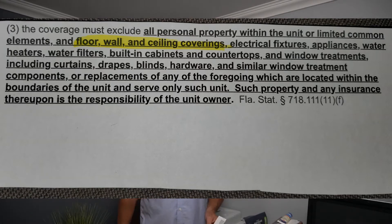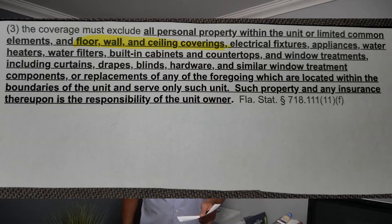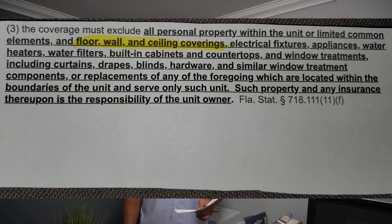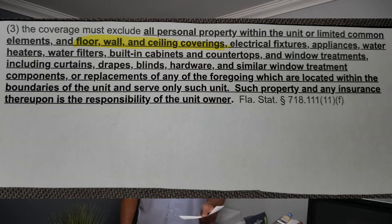Let's look at the Florida Condominium Act and what the Association is responsible for. They're responsible for the following — except this excludes all personal property within the unit or limited common elements. This one is very important: floor, wall, and ceiling coverings. Also excluded: electrical fixtures, appliances, water heaters, water filters, built-in cabinets, countertops, etc.